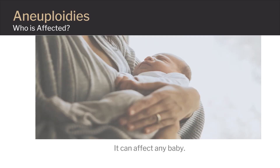Fetal aneuploidy can affect any baby. The risk of having a child with fetal aneuploidy increases with parental age. For example, at 20 years of age, your risk of having a child with a chromosome abnormality is 1 out of every 1,480 pregnancies. At age 40, your risk is higher, estimated at 1 out of every 65 pregnancies. If you're planning on becoming pregnant, talk with a healthcare provider about genetic counseling to screen for potential genetic conditions.